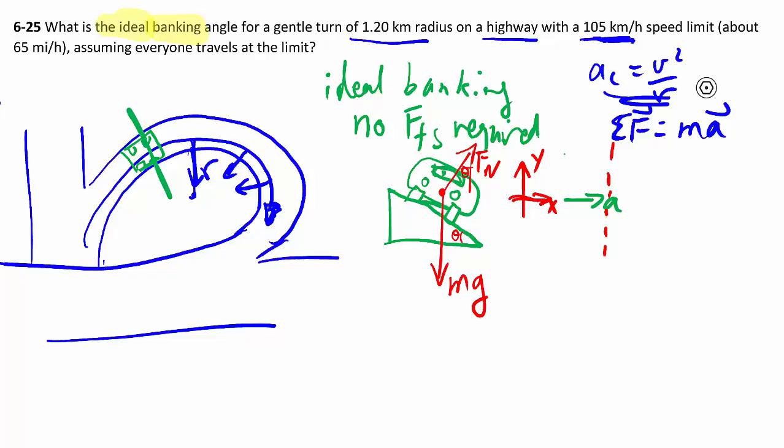In this case mg is already all in the y so we're not decomposing that, we're just decomposing my normal force. We know ax in this case will be my ac which is v squared over r, and we know my ay will be zero.